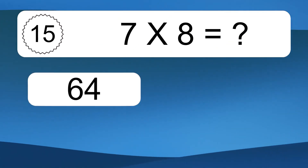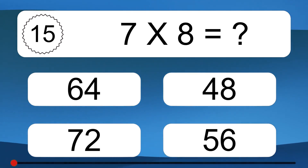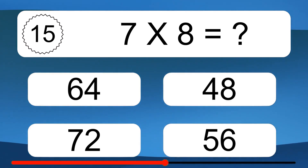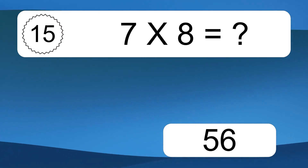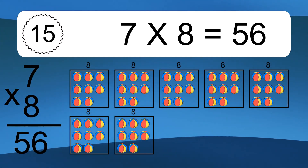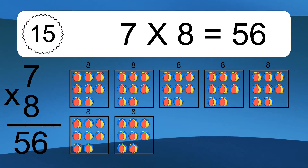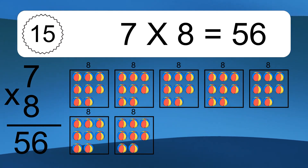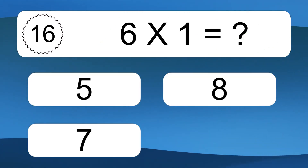7 times 8 equals what? 7 times 8 equals 56. We have 7 boxes, and each box has 8 colorful balls inside. If you count all the balls in all the boxes together, you will have 7 times 8 balls. This equals 56 balls.